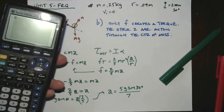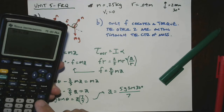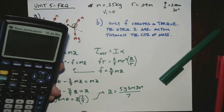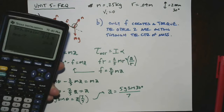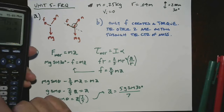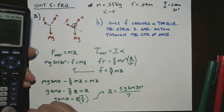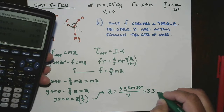We can get a number for that. We need 5 × 9.8 × sin(30°) ÷ 7. That works out to 3.5 meters per second squared. That's the answer to part C — the linear acceleration of the snowball as it rolls down the inclined section of the roof.